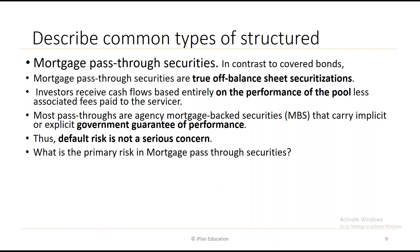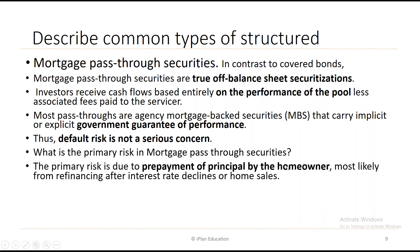The primary risk in mortgage pass-through securities is reinvestment risk due to prepayment. The mortgage pass-through securities are more susceptible to prepayment, and as a result, reinvestment risk is higher. The primary risk is due to prepayment of principal by the homeowner — most likely from refinancing after interest rate declines or home sales. For example, when the RBI cuts the repo rate, banks cut home loan rates. A borrower may take a loan from another bank and pre-close the existing one.